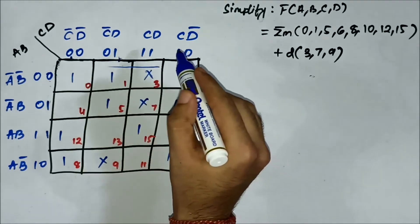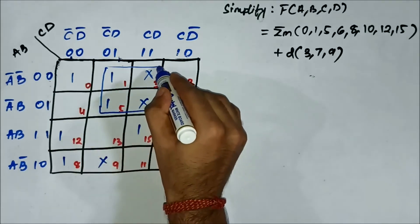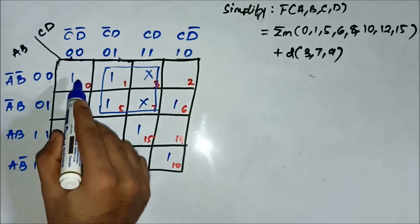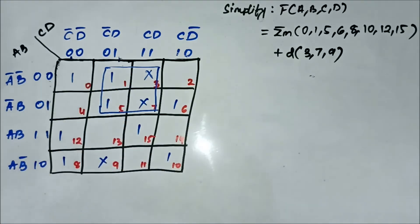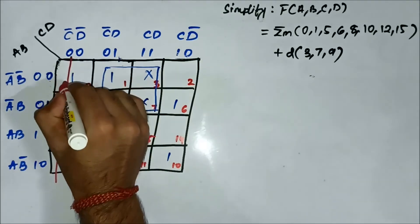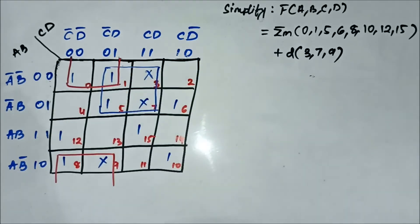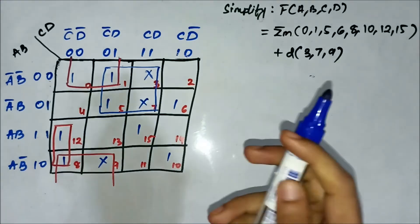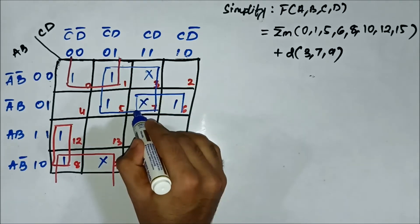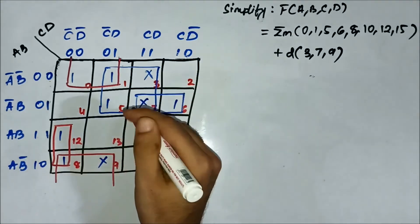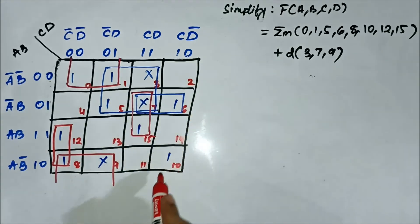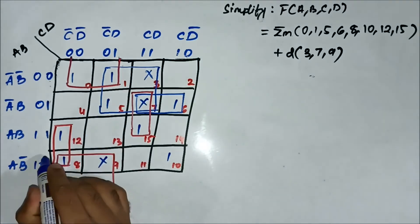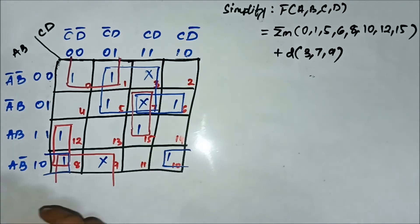Now we form the groups. Cells 1, 3, 5, 7 form a quad. Cells 8, 9, 0, 1 form a quad. Then 8 and 12 form a pair, 6 and 7 form a pair, 7 and 15 form a pair, and 8 and 10 form a pair. All the groupings are done and all the 1-marked cells have been covered, which is the priority.